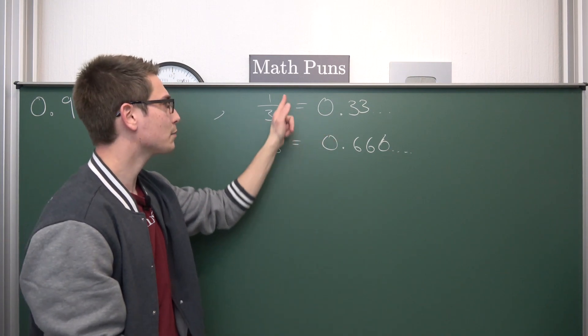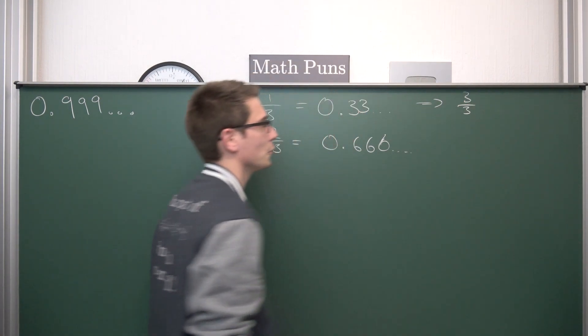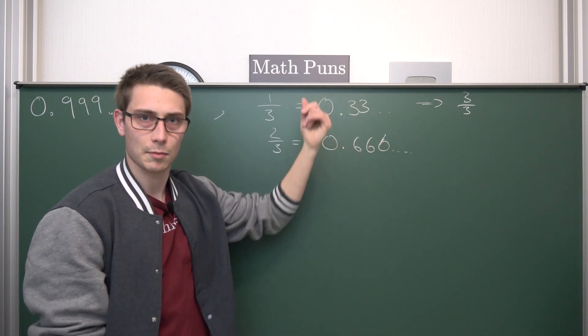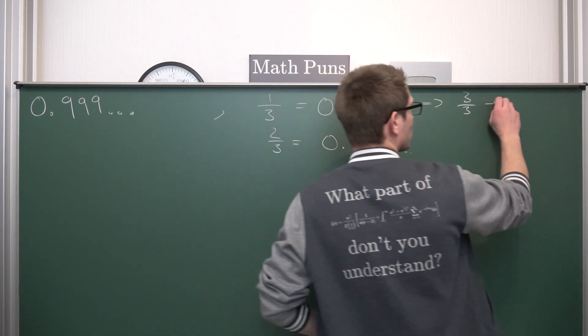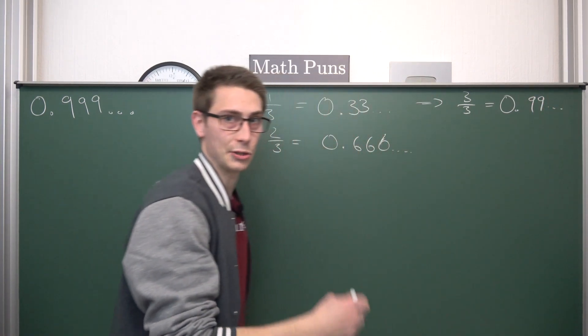So taking two times one third is going to turn into two thirds, and this is obviously 0.666... Now what is going to happen if we take this one third three times? Three times one third is going to turn into three over three. But if we take all the threes right here times three in a decimal expansion, we are going to get out 0.99... up until infinity, which is the quantity we are seeking after.